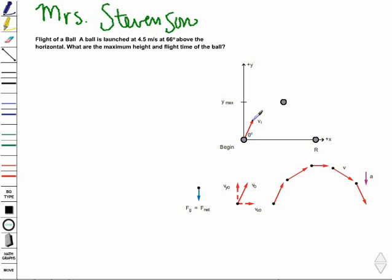We have our initial velocity, which can be represented either by v sub i or v sub 0 — they both mean initial velocity. When we look at our motion diagram of the flight of the ball, we can see that the initial velocity starts out larger, and the velocity decreases as it goes up because the arrows are getting smaller. Then on the way back down, our arrows are getting bigger, so the velocity is increasing. So our acceleration is in the downward direction.